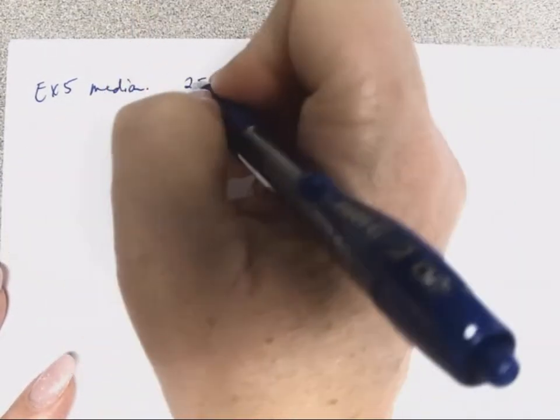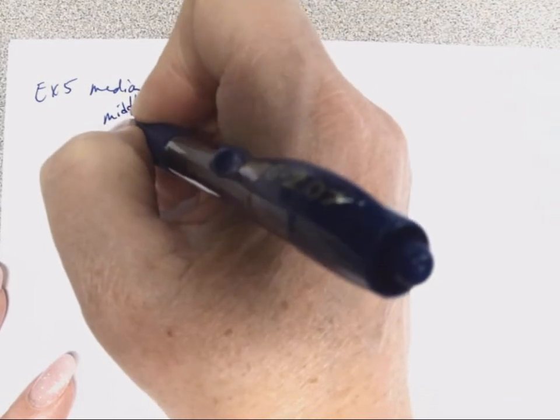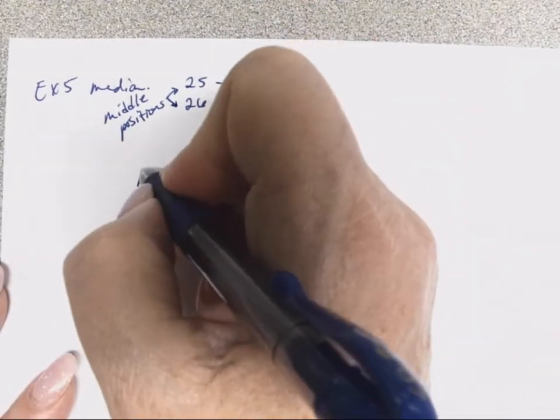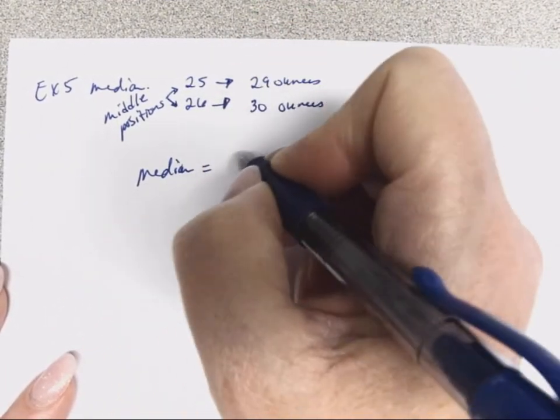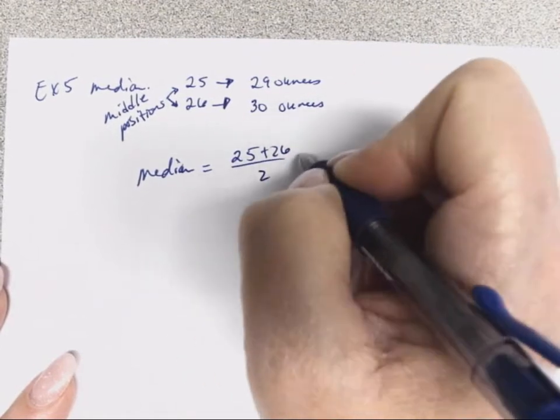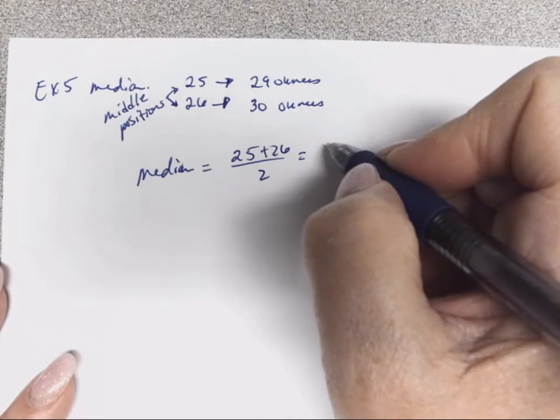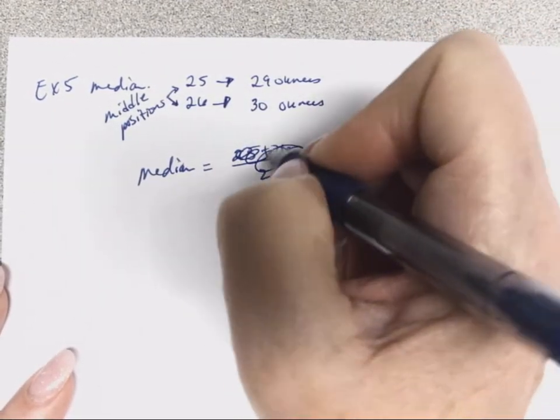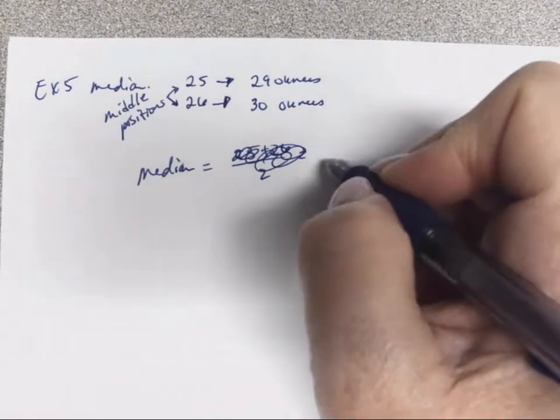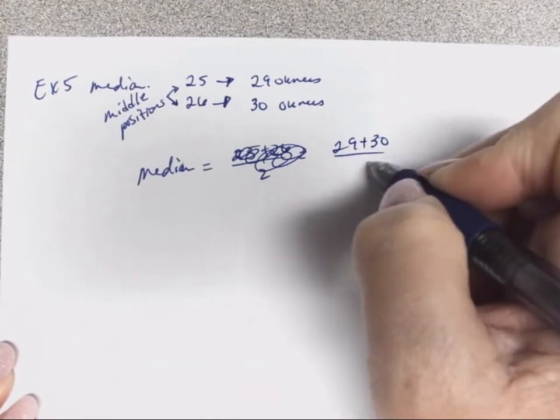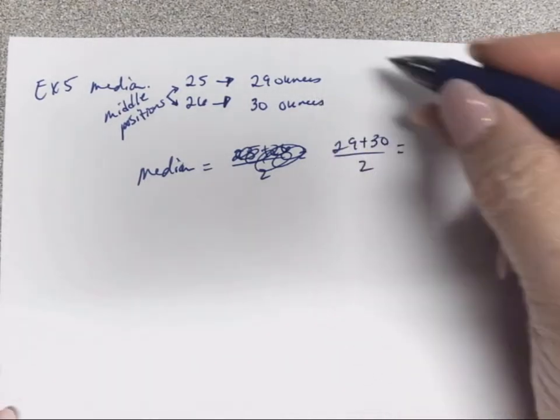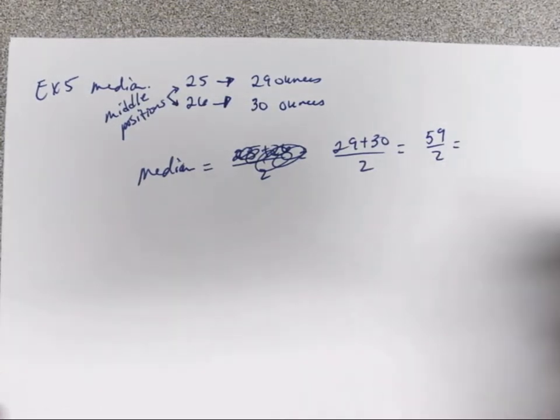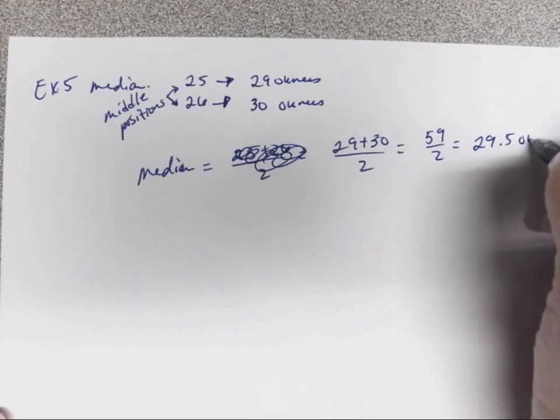To find our median for example five, we need to look at those two positions, number 25 and number 26. The 25th number was 29 ounces, and the 26th number is 30 ounces. We don't really want to write all 50 numbers out, so that's where we can use that chart to help us find it. These two numbers are the middle positions. To find our actual median, we're going to take 29 plus 30 and divide by 2. We get 59 divided by 2, and that gets us 29.5 ounces.